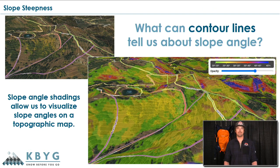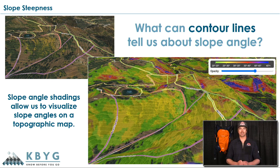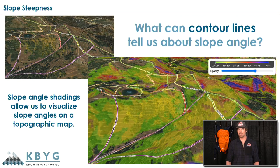Luckily, we have tons of mapping applications now that allow us to judge slope angle before we even go out into the field. A lot of mapping applications will have slope angle shaded maps that indicate the slope angle. These aren't perfect all the time, but they give us a really good indication of what to expect before we even go out into the snow. I spend a lot of time looking at these maps on my couch the night before a tour, or the week before if I'm thinking about a bigger objective.